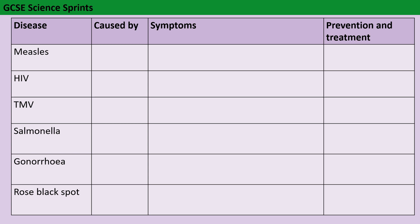If we start off by thinking about the pathogens that cause the diseases: measles, HIV and TMV are all caused by viral pathogens, and that's significant because it means that they can't be treated using antibiotics. Then salmonella and gonorrhea are both caused by bacterial infections, so they can be treated with antibiotics. And then rose black spot, which is a plant disease, is caused by a fungal pathogen.